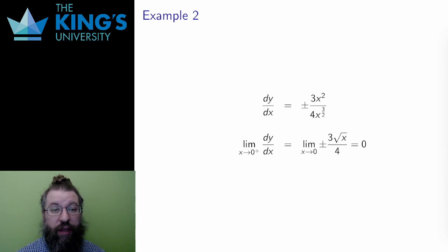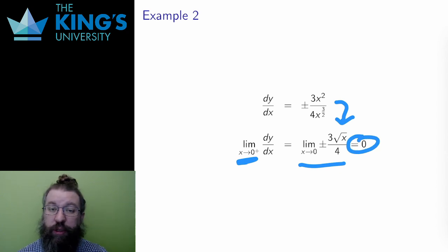Then I take the limit approaching 0 from the positive side, since the domain doesn't allow approach from the negative side. I can simplify the exponents of x, leaving just a root of x in the numerator. Well, then there is no more division by 0, and the limit of this just evaluates to 0, and since the limit evaluates to 0, this must be a cusp.